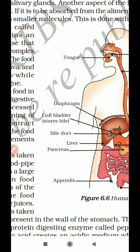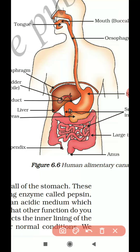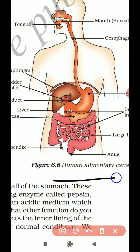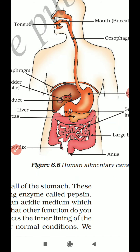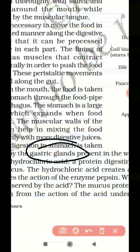The inner lining of the stomach has gastric glands. Here is the spelling of gastric glands. This gastric gland is present in the inner wall of the stomach, and this gastric gland is going to release three things.